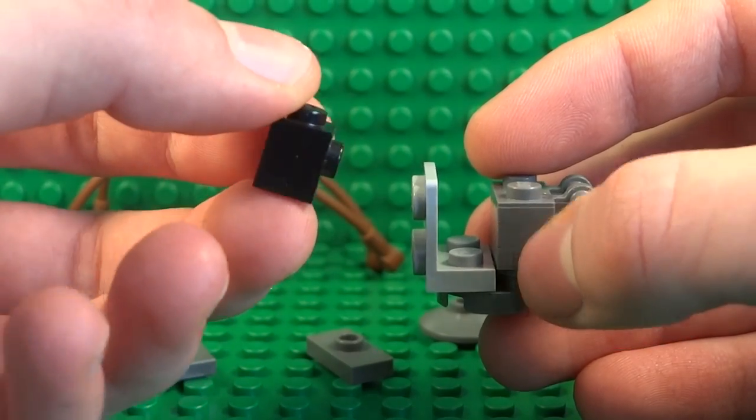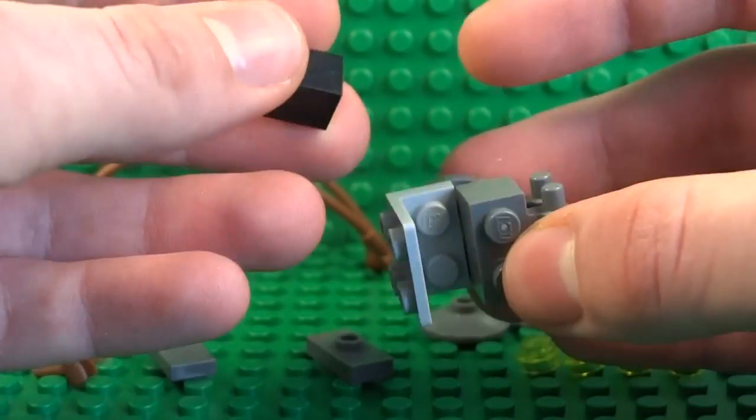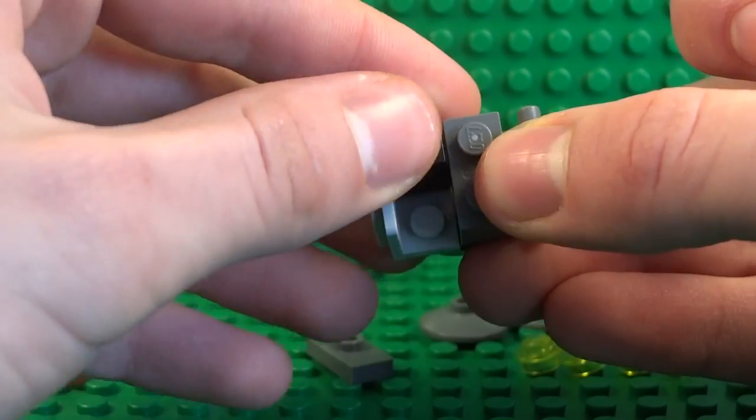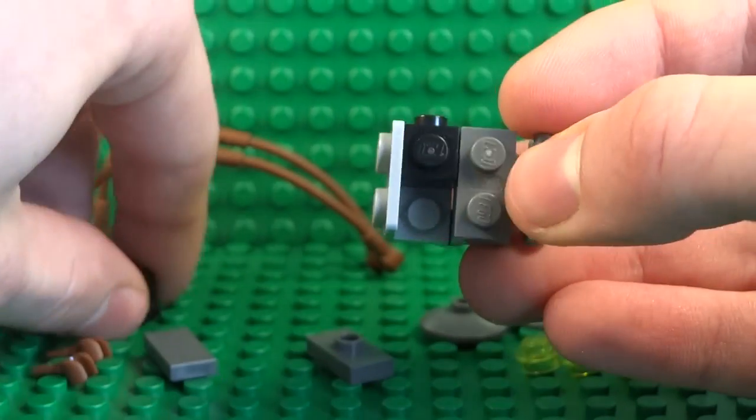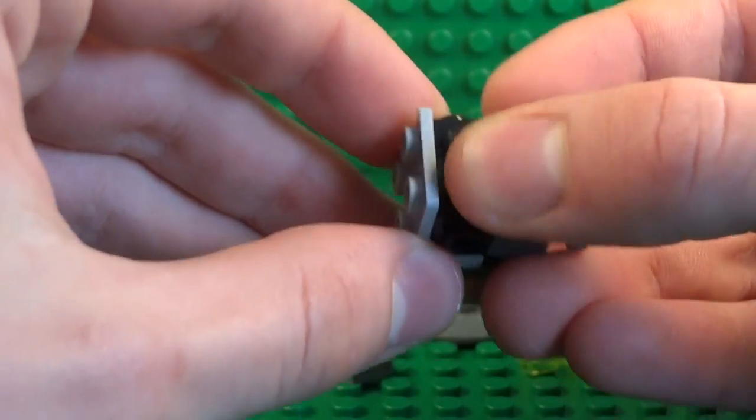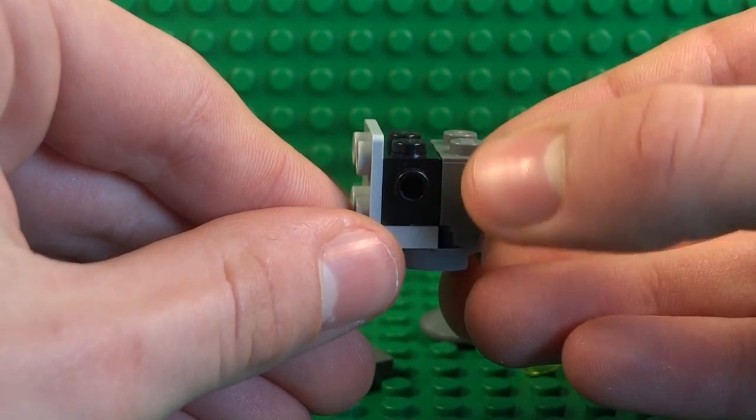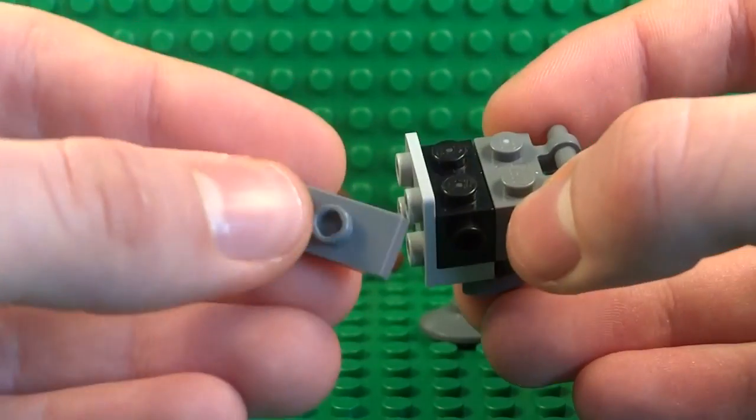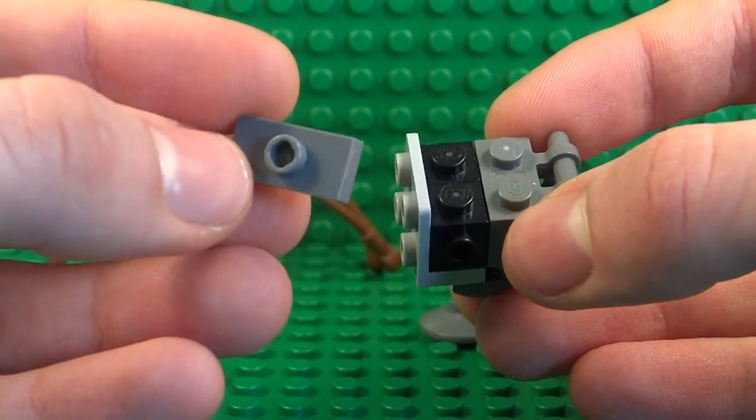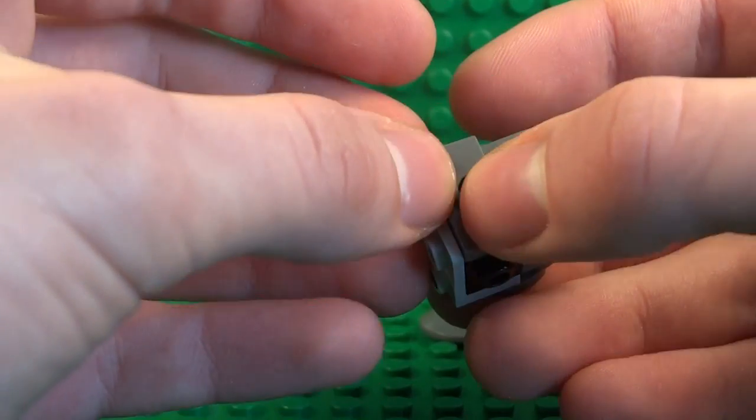And then in this gap in the middle you need to take a couple of 1x1 bricks with this stud on the side and place both of them facing outwards like that. And then on top of that you can take a 1x2 tile with the stud in the center and put that on top.